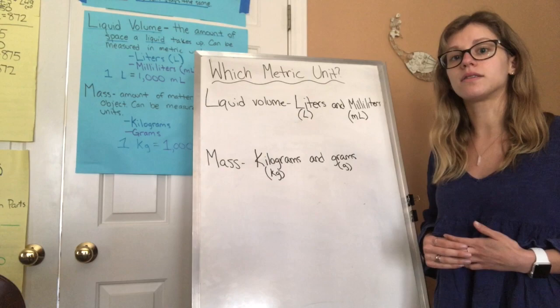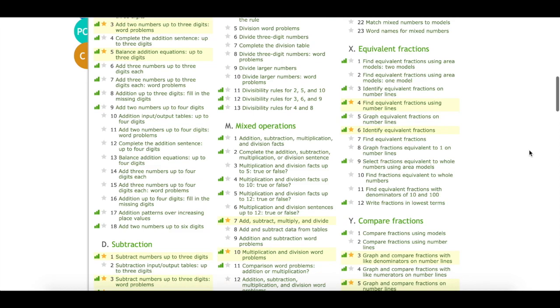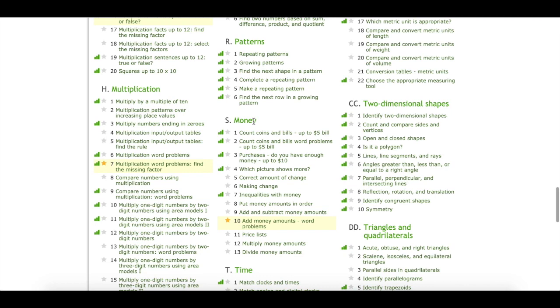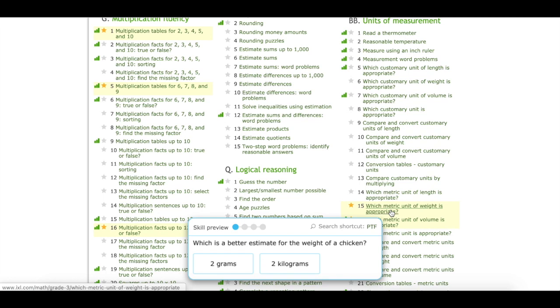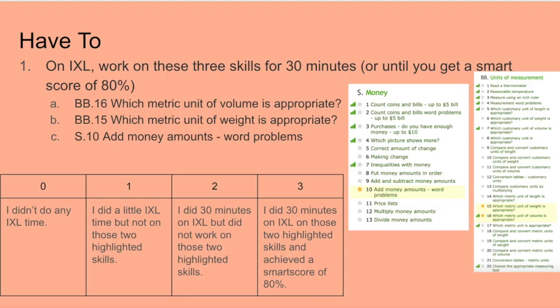Now we're going to look at your assignment for today, which is a few IXL skills. Your assignment is to work on three IXL skills. One is under Money: S10 — Add Money Amounts Word Problems. Your other two IXL skills are under Units of Measurement: BB16 — Which Metric Unit of Volume is Appropriate, and BB15 — Which Metric Unit of Weight is Appropriate.